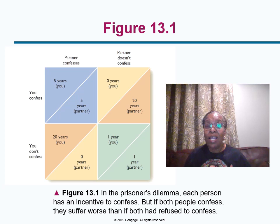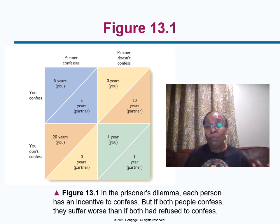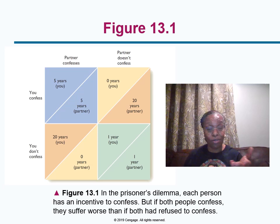Police take you to separate rooms and interrogate both of you until one confesses. If neither of you confess, police really don't have evidence and can only convict you of a lesser offense — say, one year in prison. But if either person confesses and testifies against the other, the confessor goes free and the other person gets 20 years in prison. However, if both of you confess, you might each wind up with five years in prison.